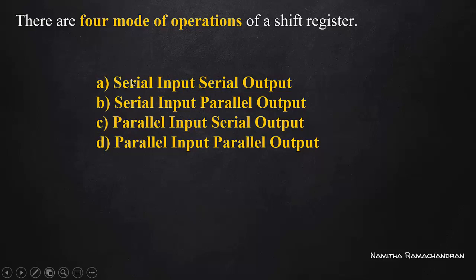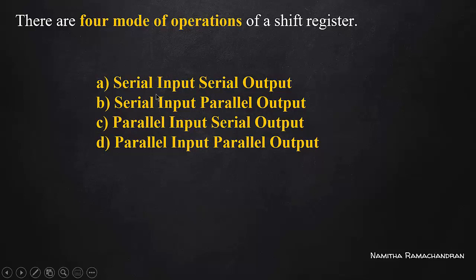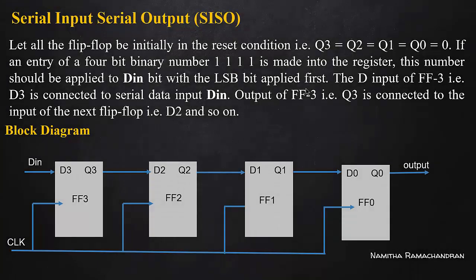We call it a bit of register — a bit of shift register, serial input serial output. One university question is: serial input serial output registers are used for serial data transmission. What do you mean by serial data transmission? You can send one bit after another, one after another. What you can do is use serial input serial output type shift register for 4 bits.